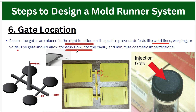Generally we choose the gate location on Surface B, not on Surface A. Surface A is the aesthetic surface, so we do not locate the gate there. As you can see, placing the gate on the visual or aesthetic surface creates a cosmetic imperfection — it should not be there. The gate should be located on the inside surface, which is why gate location is very important.